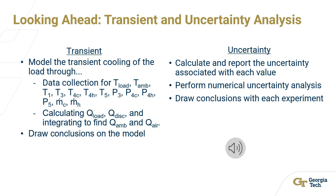Looking ahead to the week two portion of the lab, we will model the transient cooling of the load while being cooled by the ambient air and by the compressor. This will be done by data collection of the variables listed above. We will then calculate the load energy balance for each transient response. Completing an uncertainty analysis will allow the team to state the confidence associated with each value, and we will form conclusions about the validity of the system modeling and the capabilities of the system.